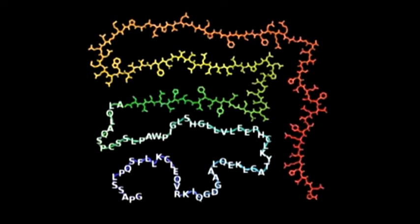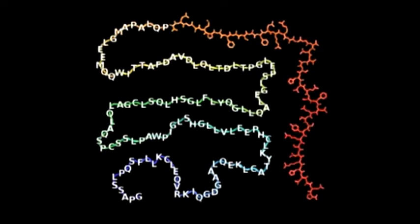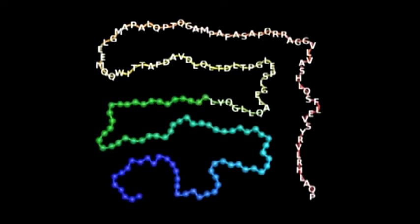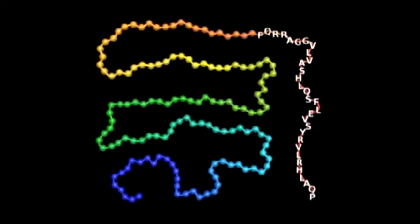To make it simpler, each different amino acid can be represented by a single letter. Now, each amino acid is shown as a colored ball, looking like beads on a string. This makes the protein structure easier to imagine.